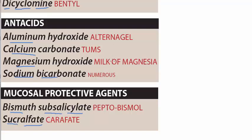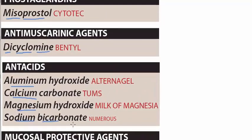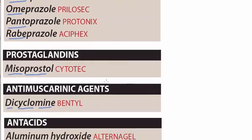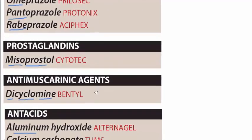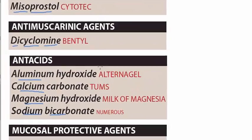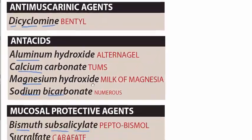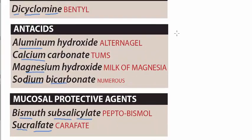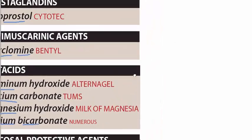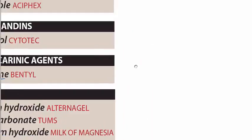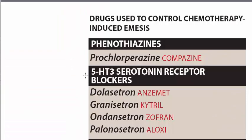So these were the agents, and you see that histamine H2 receptor blockers, proton pump inhibitors, prostaglandins, antimuscarinic agents, antacids, and mucosal protective agents are all used for peptic ulcer or ulcerative conditions of the GIT.